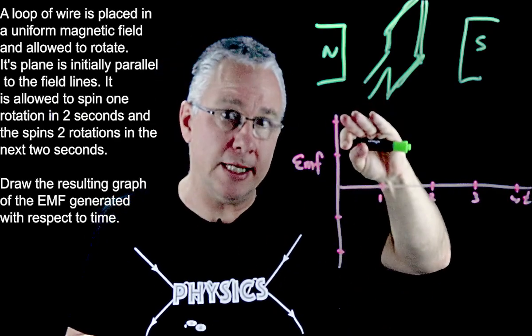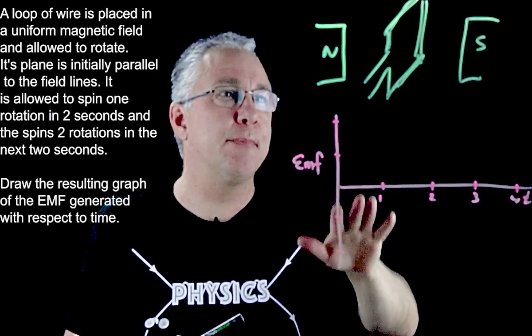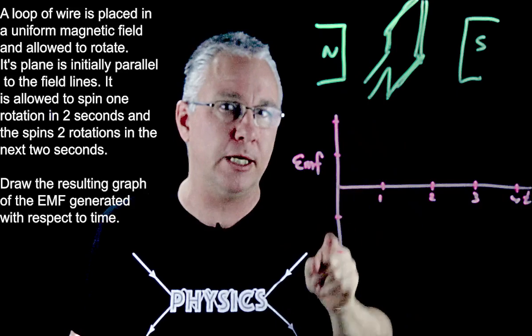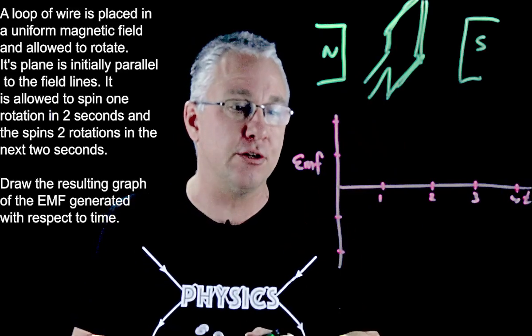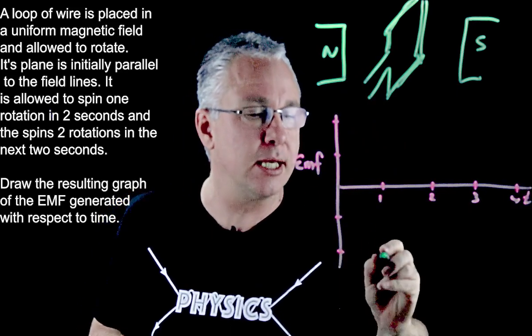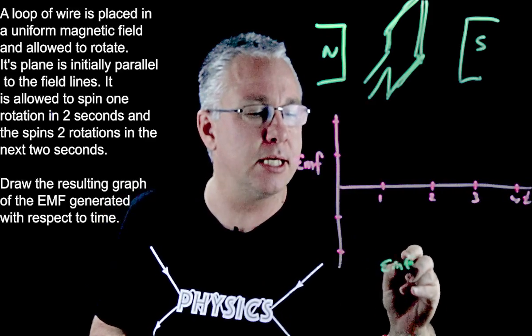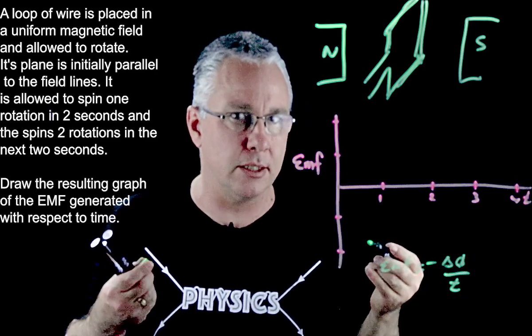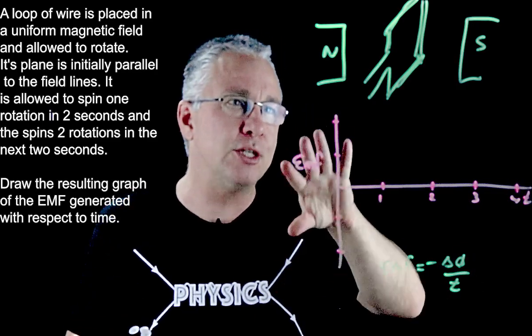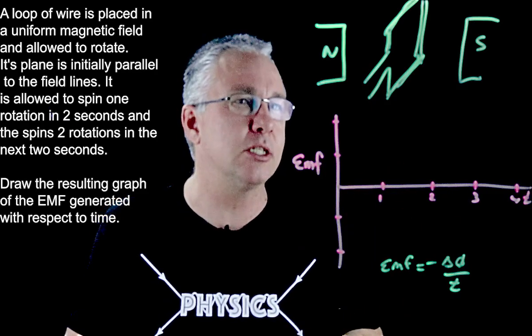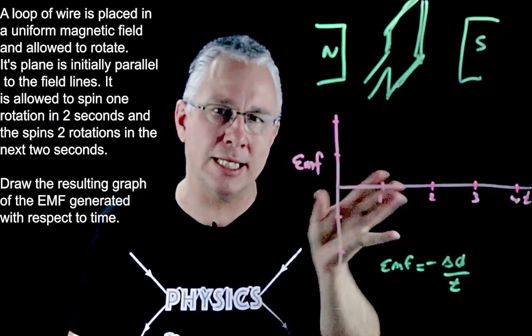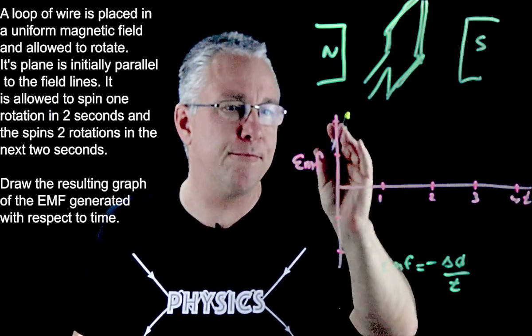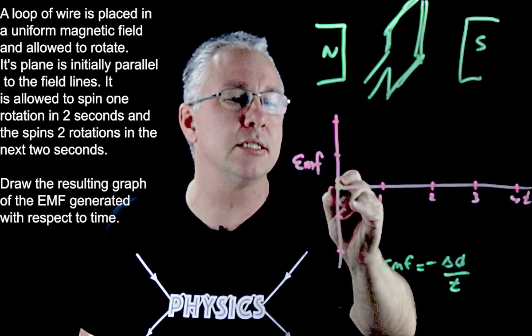This is going to rotate once in two seconds and because of the fact that in this position here we have maximum flux going through the loop, then the rate of change of flux, if you remember Faraday's law says that the EMF is equal to negative the rate of change of flux with respect to time. Now we're not worried too much about the negative here because that's related to Lenz's law, but in this position my flux is at a maximum but my rate of change of flux is actually at a minimum. So in this case my EMF in this position is actually zero.